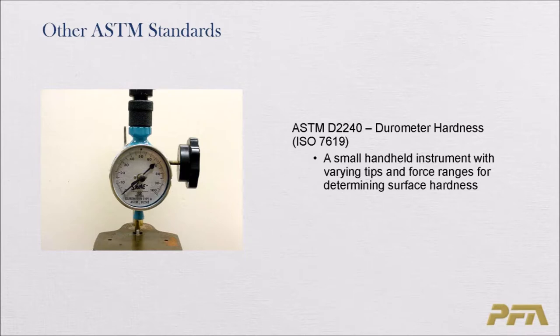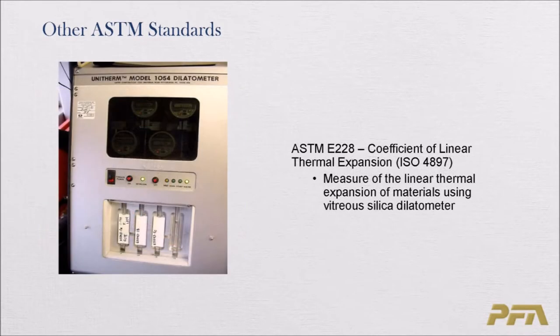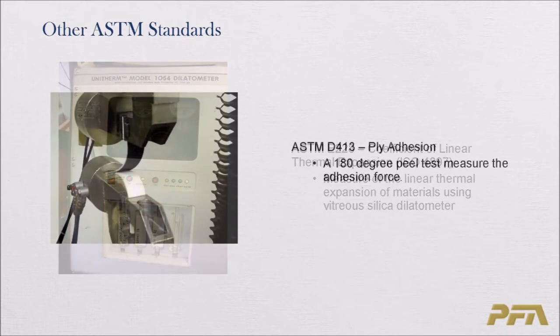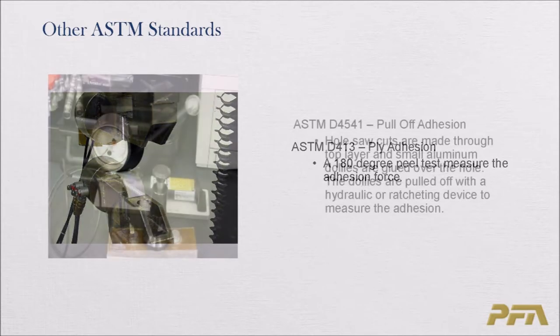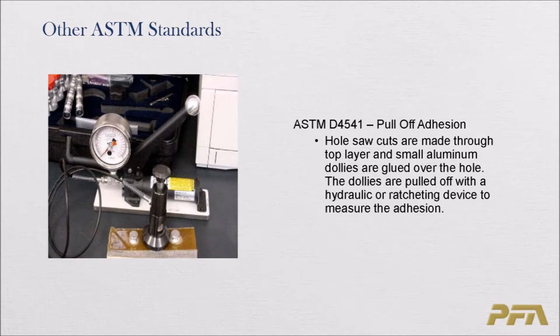ASTM D2240 is durometer hardness — a small handheld instrument with varying tips and force ranges for determining surface hardness. E228 is the coefficient of linear thermal expansion, measuring linear expansion using a vitreous silica dilatometer. Adhesion tests include the 180-degree peel test for adhesion force, and pull-off adhesion where hole-saw cuts are made through a top layer, small aluminum dollies are glued over the holes, and the dollies are pulled off with a hydraulic or ratcheting device to measure adhesion.